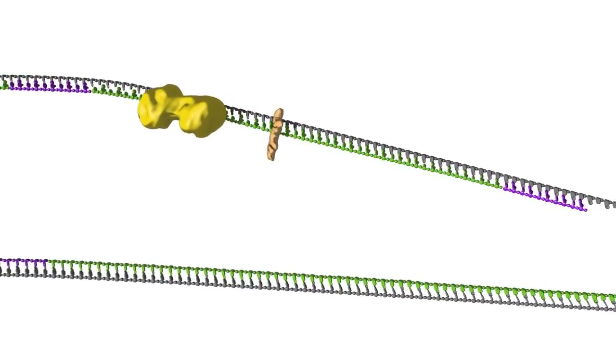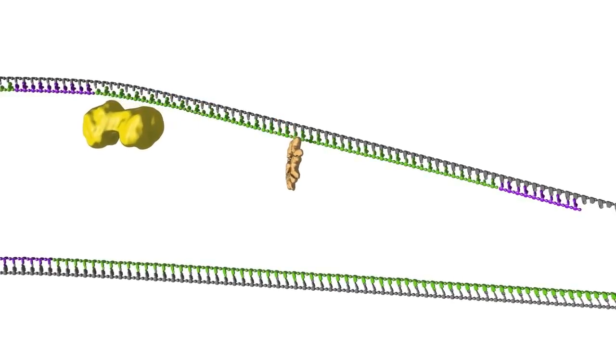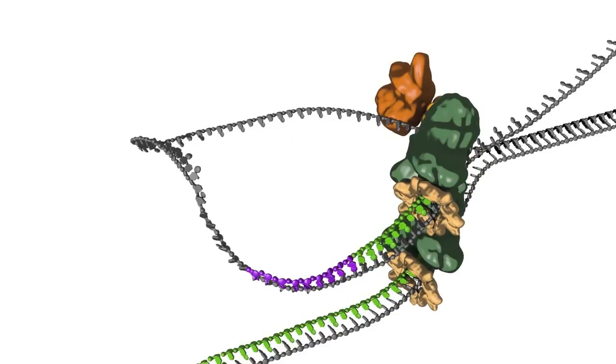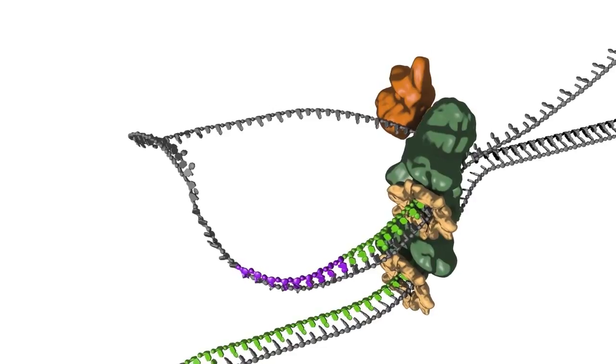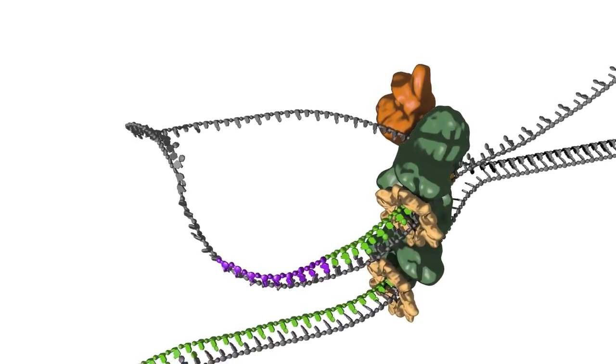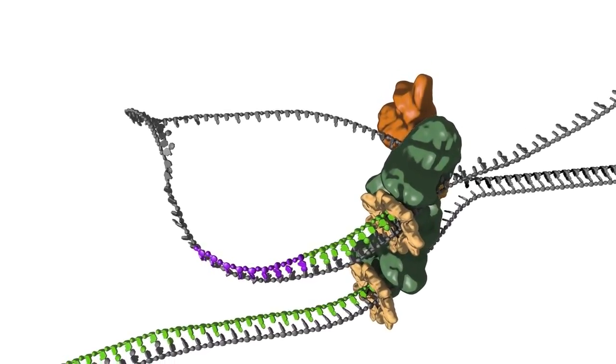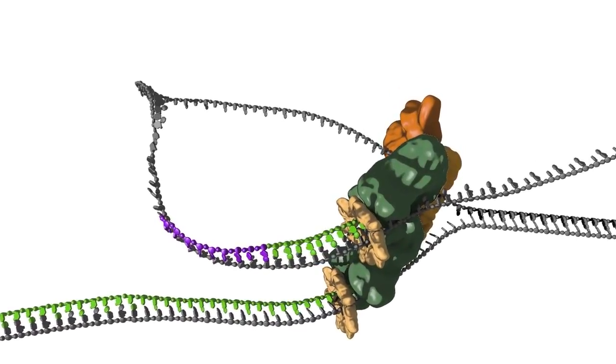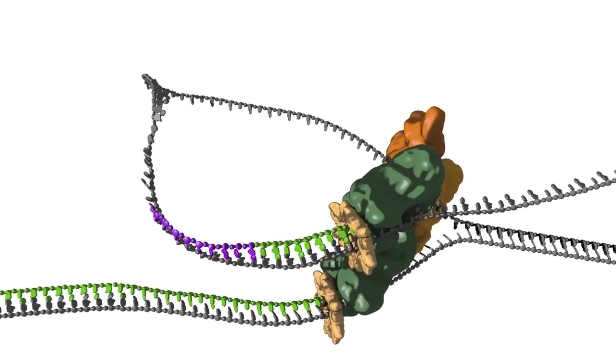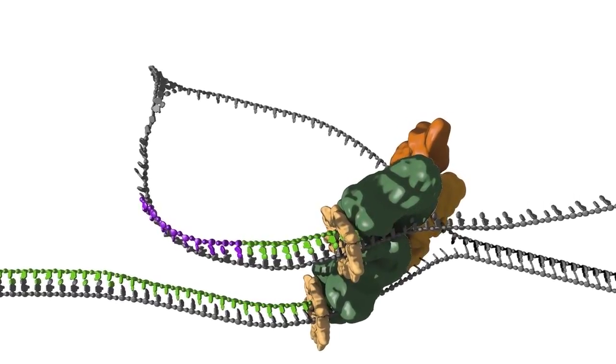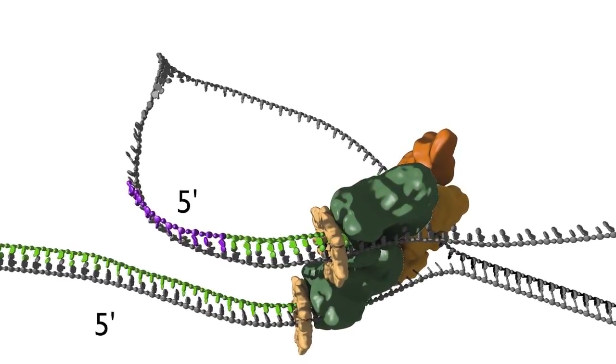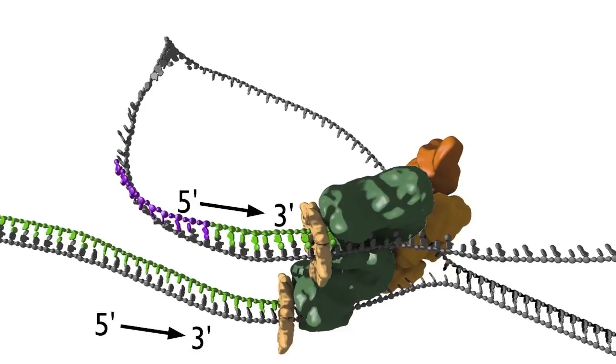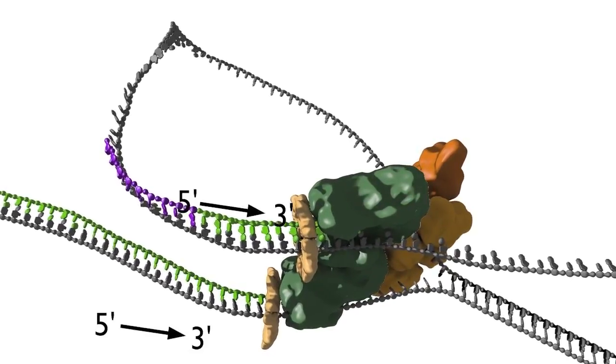Now the lagging strand has been elongated by one more Okazaki fragment. While this view of the replication fork is easiest to understand, in reality the leading and lagging polymerases are coupled and move in concert with the helicase. This coupling requires one DNA strand to be looped around so that the lagging polymerase can synthesize DNA in the five prime to three prime direction while moving with the fork. We explore this coupling in more detail in a separate animation.